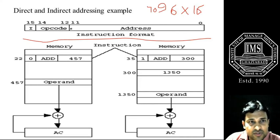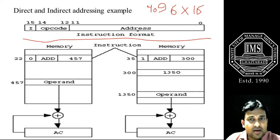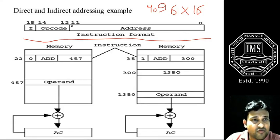So in total we have 0 to 15, that is 16 bits in the instruction format. The 4096 memory capacity is equal to 2 raised to the power 12. So bits 0 to 11, that is 12 bits, are assigned for memory addresses, and the remaining 4 bits are assigned to the opcode.